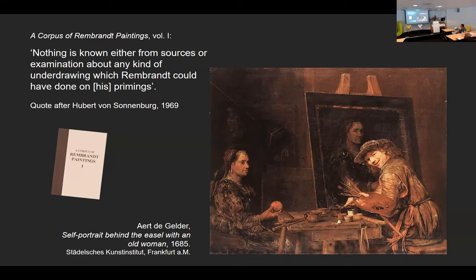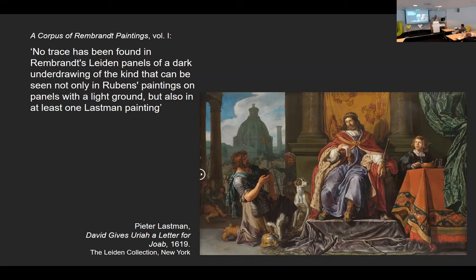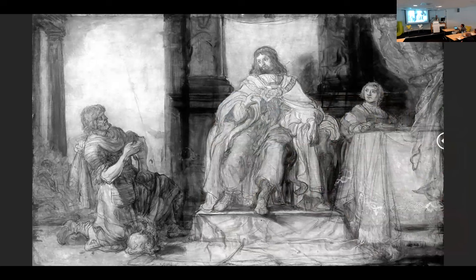An Art van Gelder painting was used as an illustration of the artist in the studio — his props, his materials — and nothing was known about these drawings. However, it's interesting that Rembrandt was trained by Pieter Lastman. About Rembrandt's Leiden panels they said no traces of drawing could be found, unlike what we see in Rubens paintings or in one of Lastman's paintings. Yet Lastman's painting shows extensive underdrawing — all these black lines — so Rembrandt was trained by an artist who uses a lot of underdrawing.